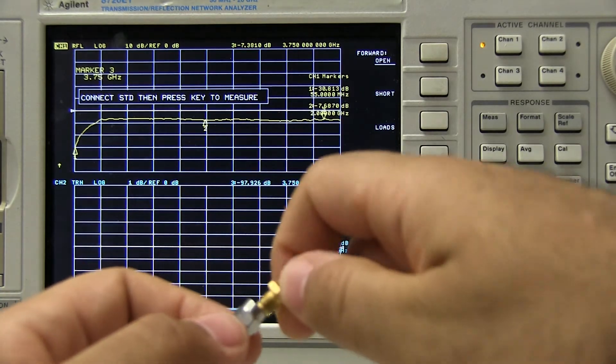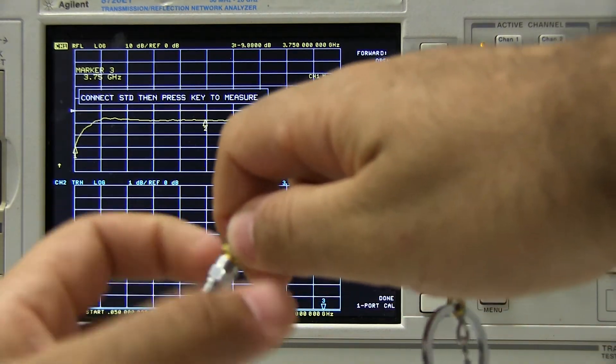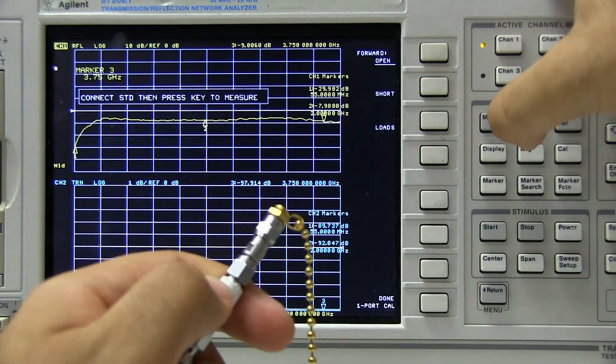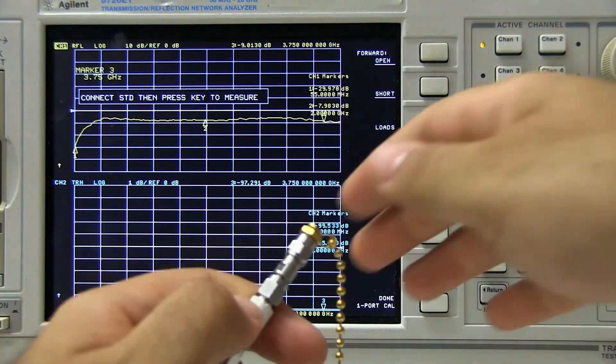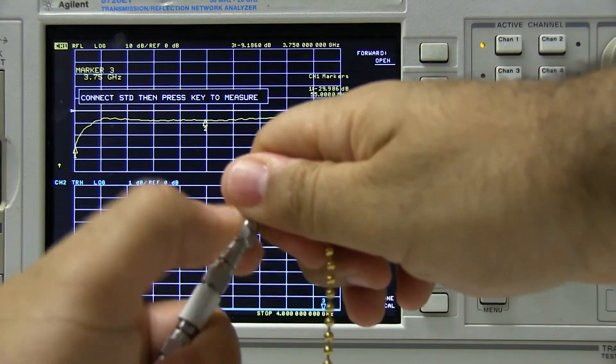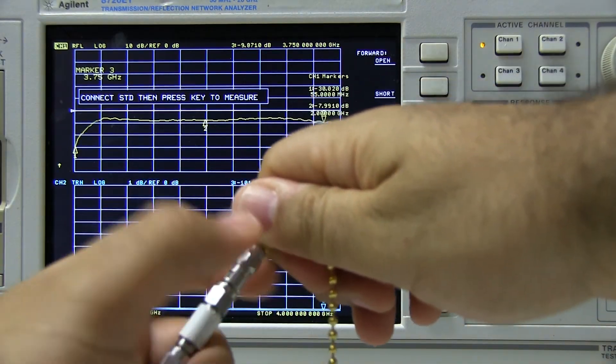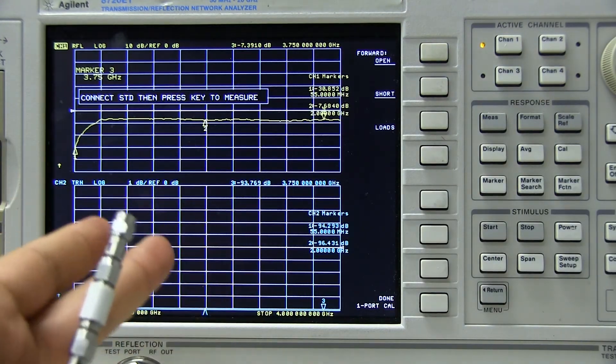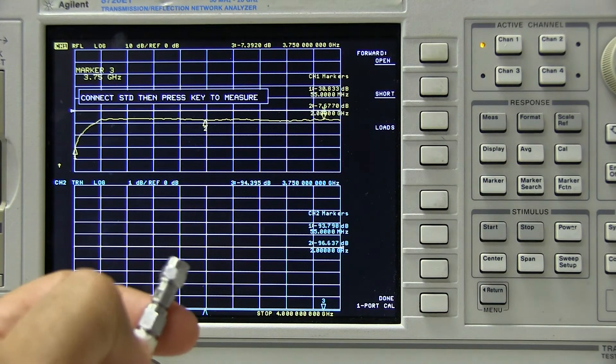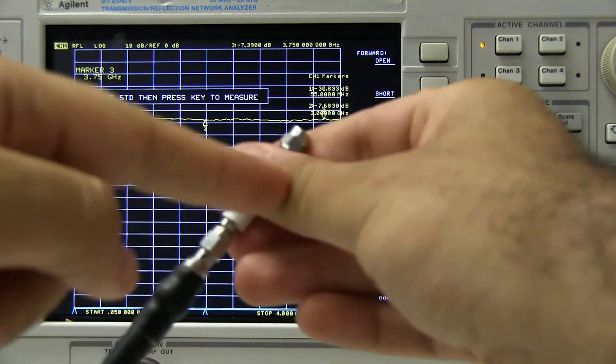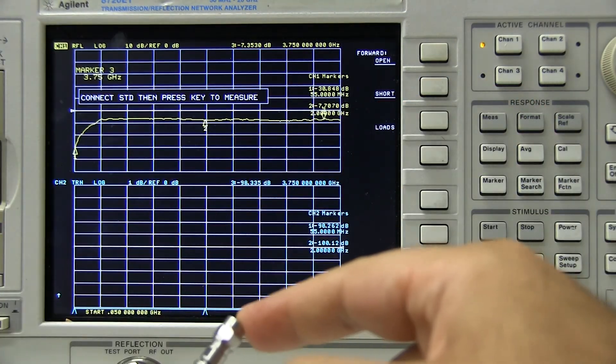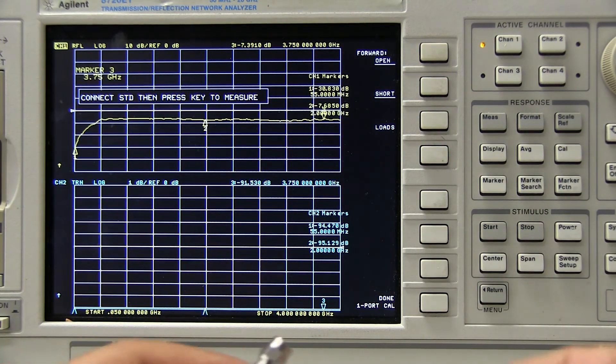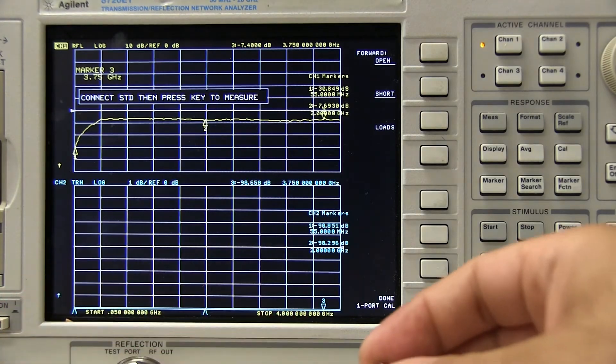I'll follow the same procedure with the short. As you can see, the sweep is pretty quick. It computes these coefficients rather quickly. What it's doing, it is saving in its memory, with respect to this cable, these connectors, up to this reference plane, what an open, short, and a 50 ohm load are supposed to look like from 50 megs to 4 gigs.